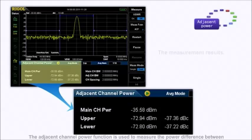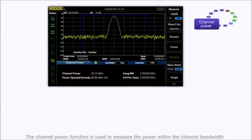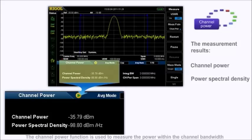The adjacent channel power function is used to measure the power difference between the main channel and the upper and lower channel. The channel power function is used to measure the power within the channel bandwidth and the power spectral density.